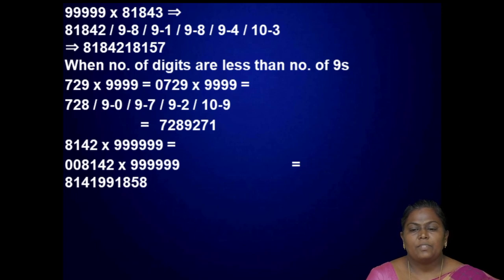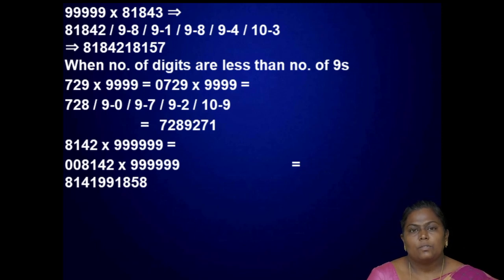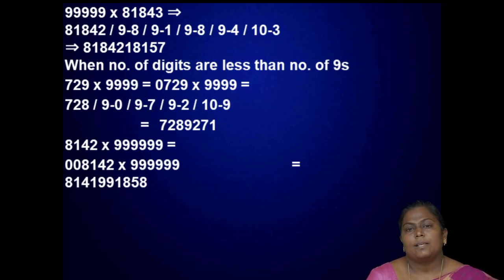When the number of digits is less than the number of 9s, for example 729 multiplied by 9999: there is a 3-digit number multiplied by 4-digit 9s, so add a leading 0 to get 0729. Then reduce 0729 by 1 to get 0728, and subtract: 0 from 9, 7 from 9, 2 from 9, 9 from 10. So the result is 7289271.